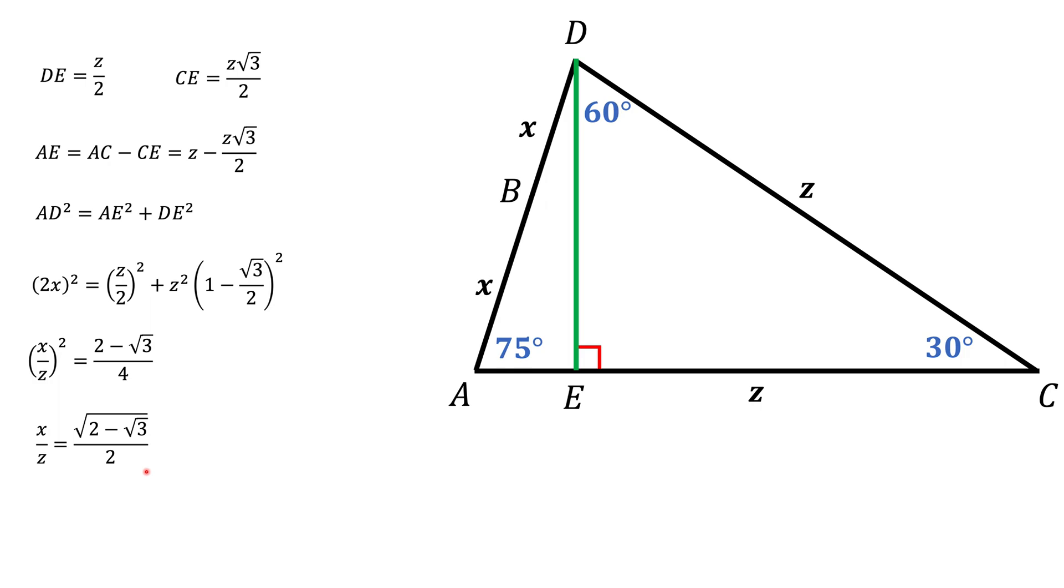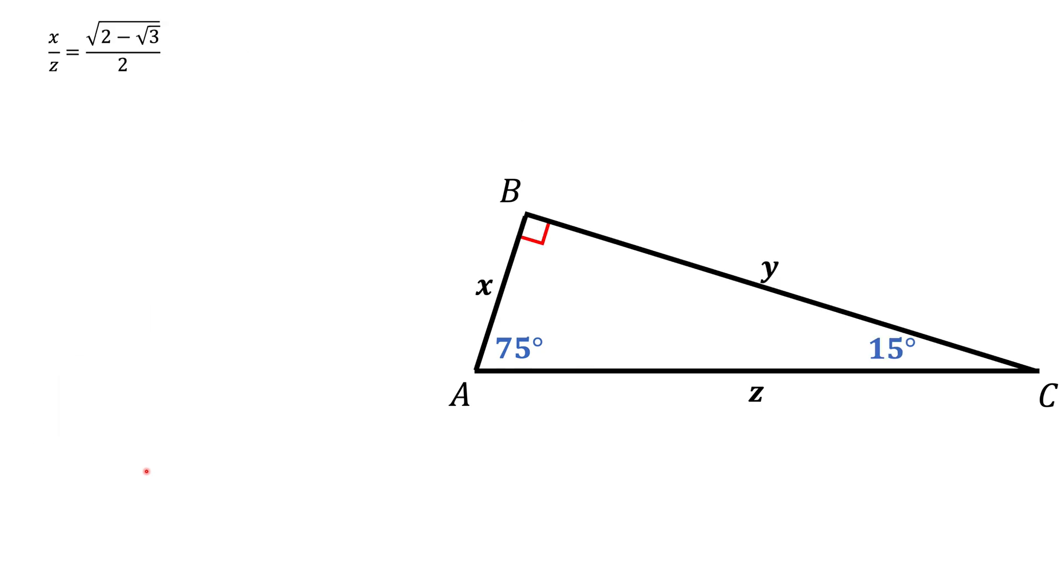So the next thing we want to do is to go back to our original triangle. And what we'd like to do is to find the ratio of y over z. Now, x, y, and z are related by Pythagorean theorem. And from that, we can find how to relate y over z via x over z. And that gives us this expression.